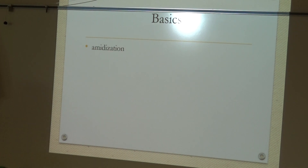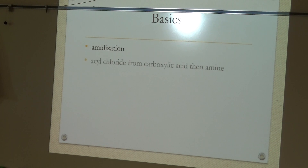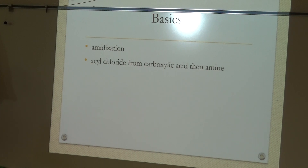This reaction is an amidation — that is, the creation of a new amide bond between what was a carboxyl carbon and the nitrogen from an amine. In order to do that, you need a very reactive carboxyl. So we're going to first form an acyl chloride from a carboxylic acid, and then react that with an amine.